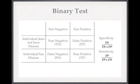If you have a binary test — that is, a test which either comes back as negative or positive — we can talk about that test's sensitivity and specificity. Sensitivity is the proportion of people with disease who test positive. Specificity is the proportion of people without disease who test negative. There are formulae for these terms written up on the slide.